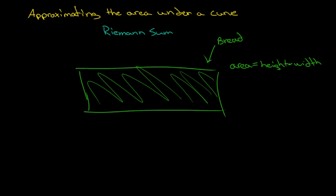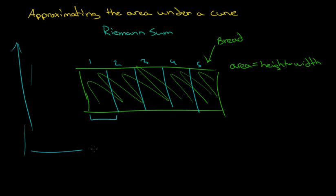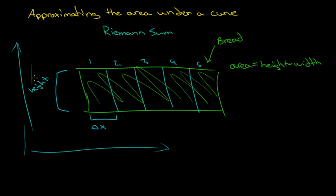But if I cut this loaf of bread into a few slices — slice, slice, slice — and I cut it into five slices, and each slice is separated by the same x value, you can imagine this is the y value on a graph and this is the x value. Then each slice is separated by a width of delta x, and the height remains the same.